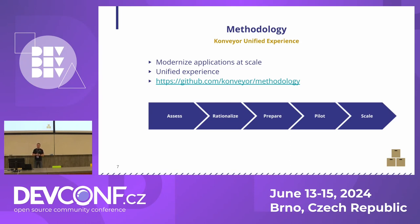Next come the Prepare and Pilot steps, where the actual work is done. A representative set of applications — not all of them, just a few representative ones — is chosen, and the necessary fixes are identified. By the end of the Pilot, those representative applications should be running on the target modernized platform. Documentation is written throughout this process to capture what fixes appear, making the final Scale step efficient. In the Scale phase, all remaining applications can be migrated faster and more predictably using the knowledge and documentation built during Prepare and Pilot.